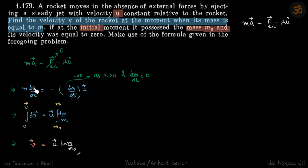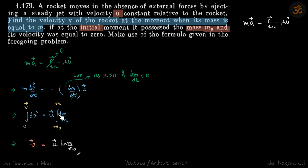We write it as m dv/dt equals minus dm/dt times u vector. Since mu is a positive term but dm/dt is a negative term — because the mass of the rocket is reducing with time — we add a minus sign so that mu remains positive. We then integrate: velocity varies from 0 to v vector, and mass varies from m naught to m, giving us velocity as a function of mass.